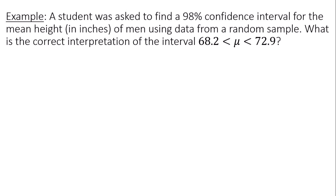What is the correct interpretation of the interval 68.2 to 72.9? So my population mean mu is between 68.2 and 72.9.